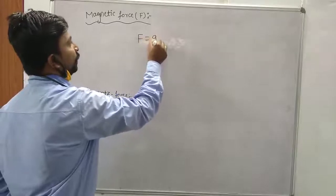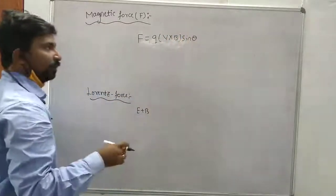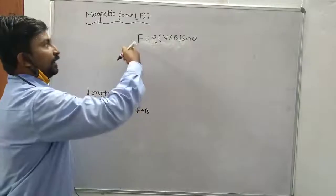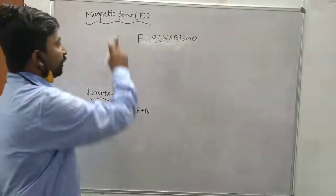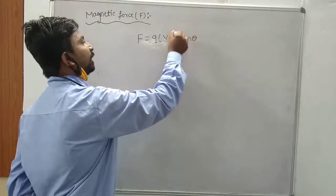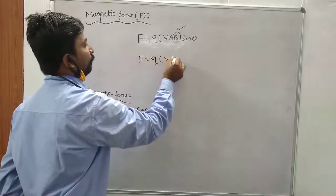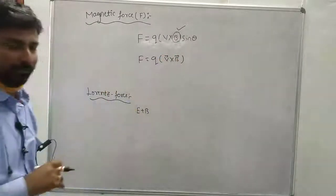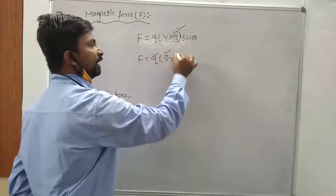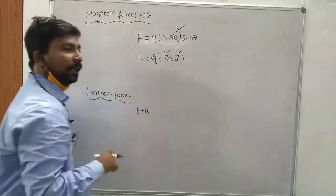Magnetic force F is equal to Q(V × B)sinθ. Suppose if theta equals 90 degrees, sin 90 is 1, so then the magnetic force is maximum. The magnetic force depends upon charge, velocity, and the magnetic field. If a charge is moving perpendicular to the magnetic field, then the magnetic force is maximum.